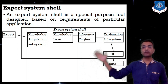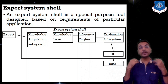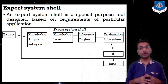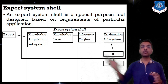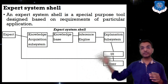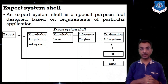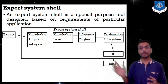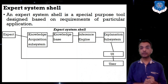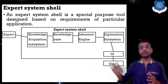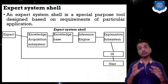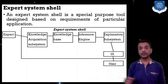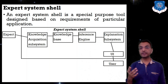In the expert system shell, an expert — such as a doctor or stock market predictor — enters knowledge into the knowledge acquisition subsystem, which is then forwarded to the knowledge base. The knowledge base is connected to the inference engine, which is connected to the explanation subsystem, then to the user interface, and ultimately to the user. The knowledge acquisition subsystem is the way to insert knowledge into the knowledge base.